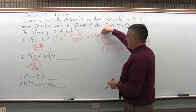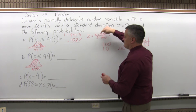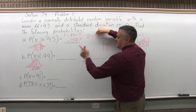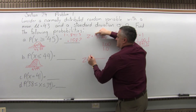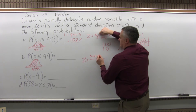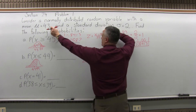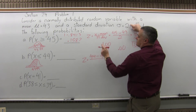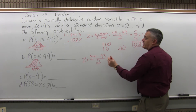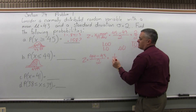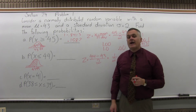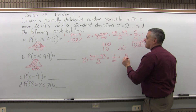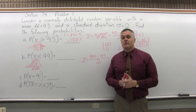Using the same formula, z equals x minus the mean over the standard deviation. For Part B, z equals 44 minus the mean of 43, over the standard deviation of 2. In the numerator, 44 minus 43 is positive 1; in the denominator, 2. So the z-score is 1/2, which as a decimal is 0.5.